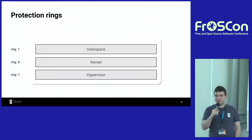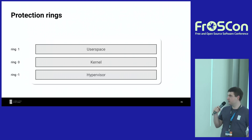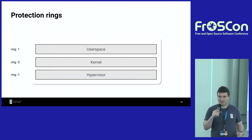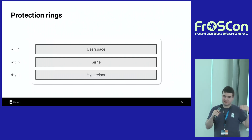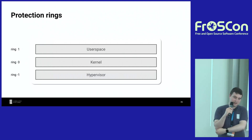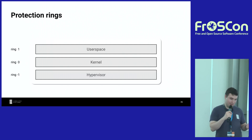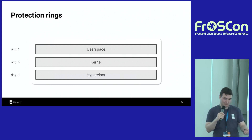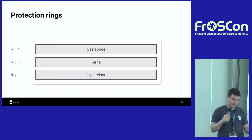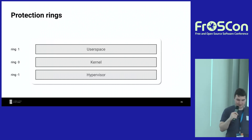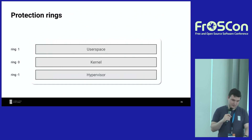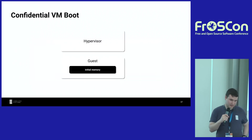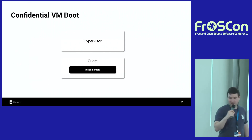The next concept is protection rings. The idea is to have different layers of privilege inside the CPU — most architectures have this. Higher privilege rings have lower numbers, and they have control over the memory of higher-numbered rings, but not the other way around. This means you can have memory areas protected from higher-numbered rings. For example, user space cannot read kernel memory; the hypervisor can have memory protected from the kernel. These concepts become important when we look at how we boot our node.